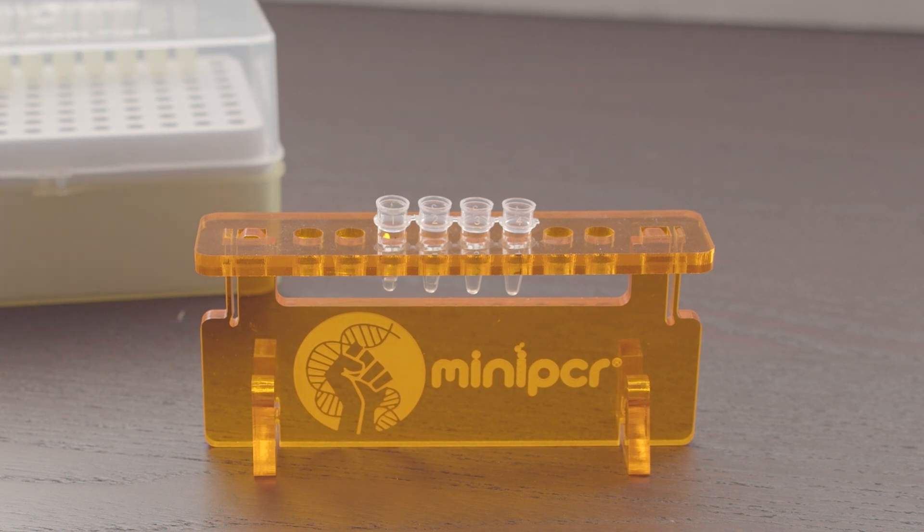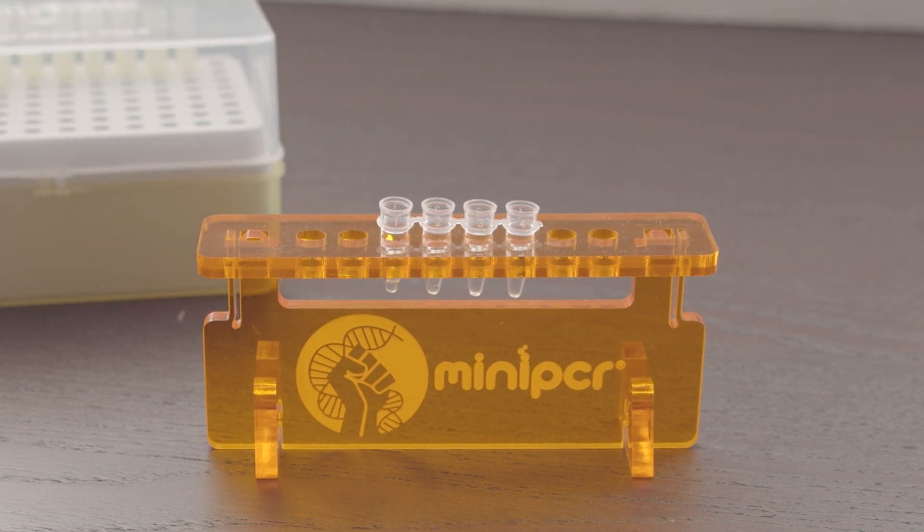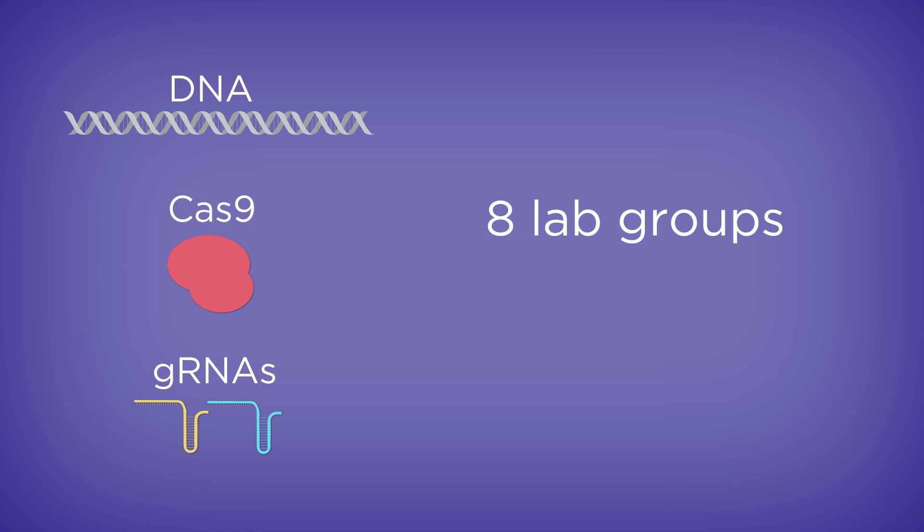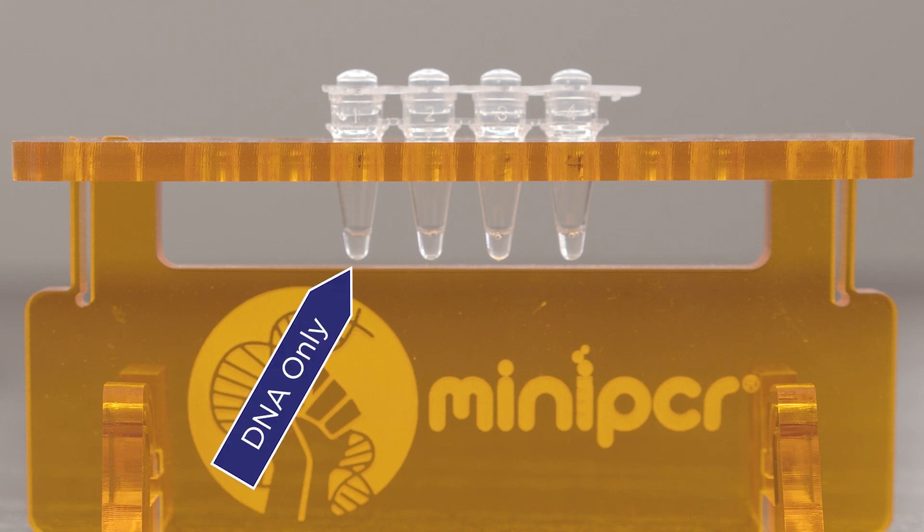Then, students will set up the corresponding CRISPR-Cas reactions in test tubes to test their predictions. Each CHOP lab kit comes with the DNA sample, Cas9 enzyme, and guide RNAs needed for eight lab groups to each carry out four in vitro CRISPR-Cas reactions: a control with only DNA, a control with Cas9 enzyme and DNA,